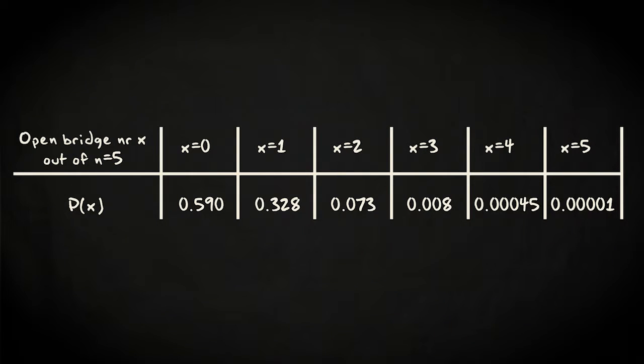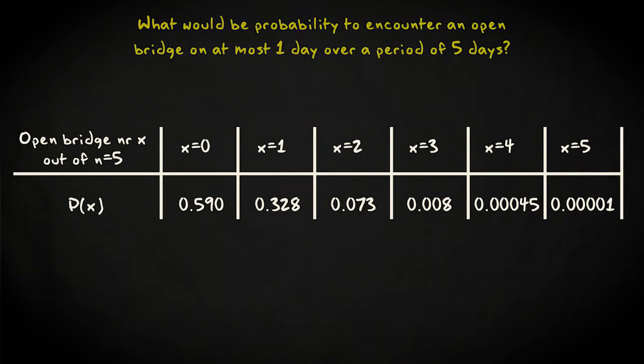Ok, let's move on to a related question, using the same example. What would be the probability to encounter an open bridge on at most one day over a period of 5 days?